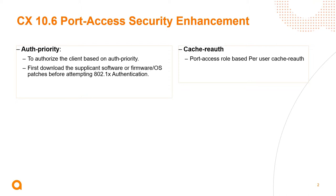The auth priority feature is very important when you have a client getting onboarded on a network. They come up with no supplicant installed — for example, an access point, a compliance laptop, or a phone which doesn't have the EAP supplicant to start .1x authentication. In those use cases, auth priority becomes handy. With cache re-auth under each port access role, you can have cache re-auth on a per-client basis by creating a role. Let's look at this feature in detail in the next few slides.